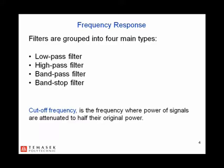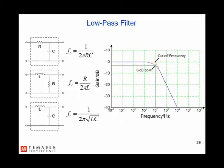Cutoff frequency, also known as the 3 dB point, is the frequency where power of signals are attenuated to half their original power, voltage/current reduced to 70.71%. A passive low pass filter typically consists of a shunt capacitor,